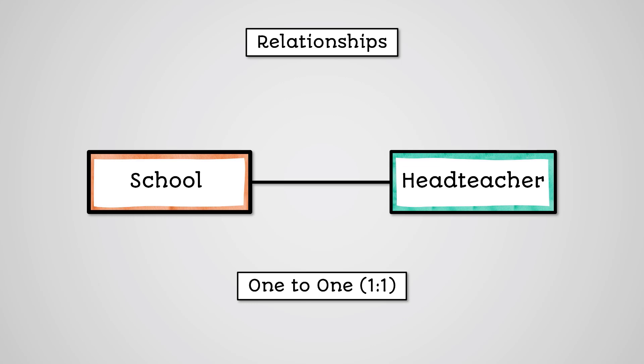The way to work out a relationship is to start on the left side and say how many times the right side belong to this, then move to the right side and see how many times the left side belongs to this. So one school has one head teacher and a head teacher only has one school.